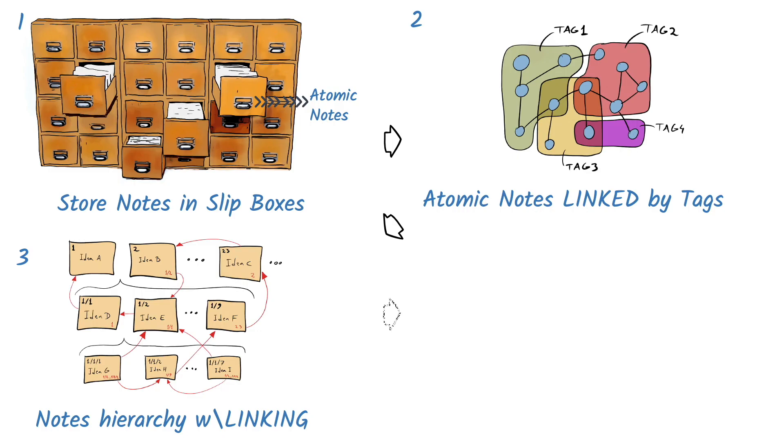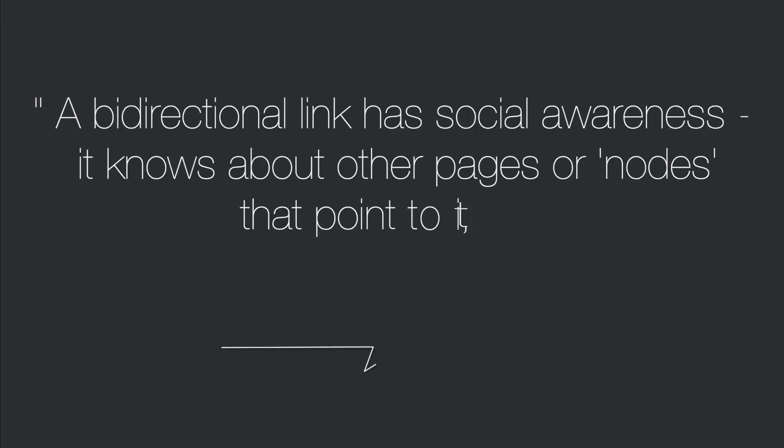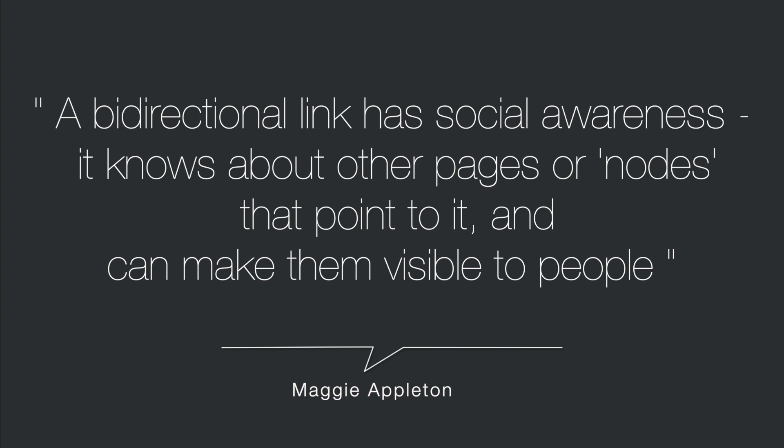Both Harry's and Nicholas's method relied on association in different ways and used methods that were best available during those times. In 2020, we've advanced significantly in terms of technology and data sciences. We've developed capabilities to connect the dots easier so that we can take advantage of our ideas and insights. As Maggie Appleton explains on her website, a bi-directional link has social awareness — it knows about other pages or nodes that point to it and can make them visible to people.